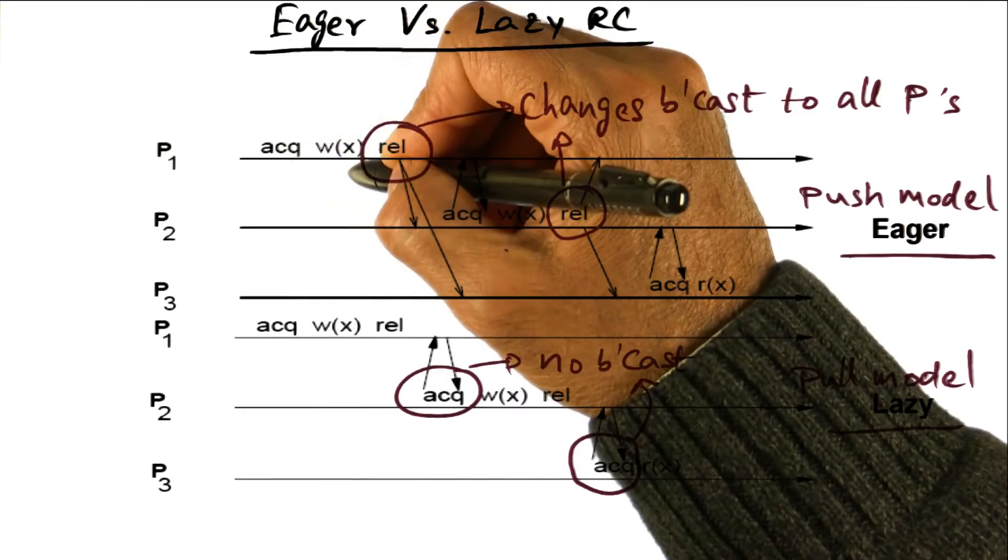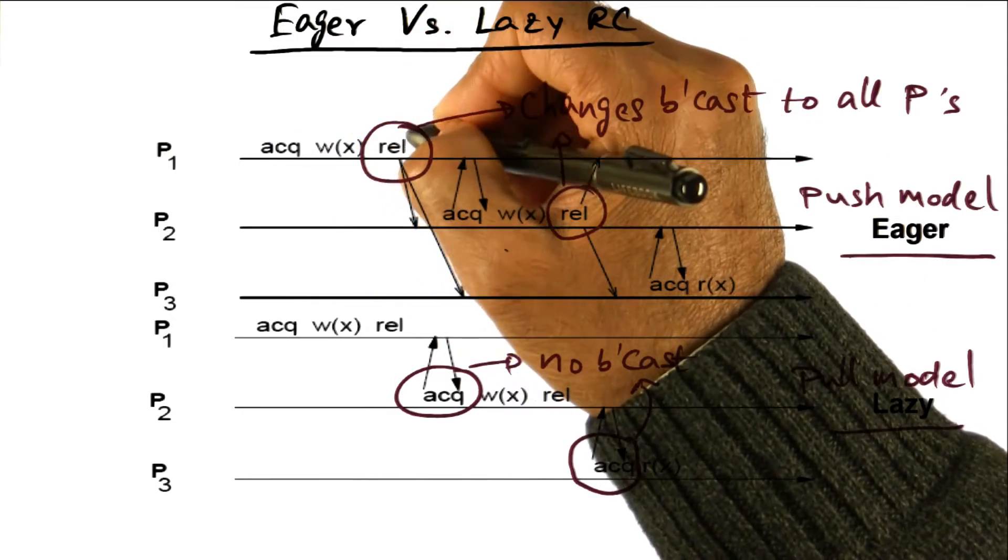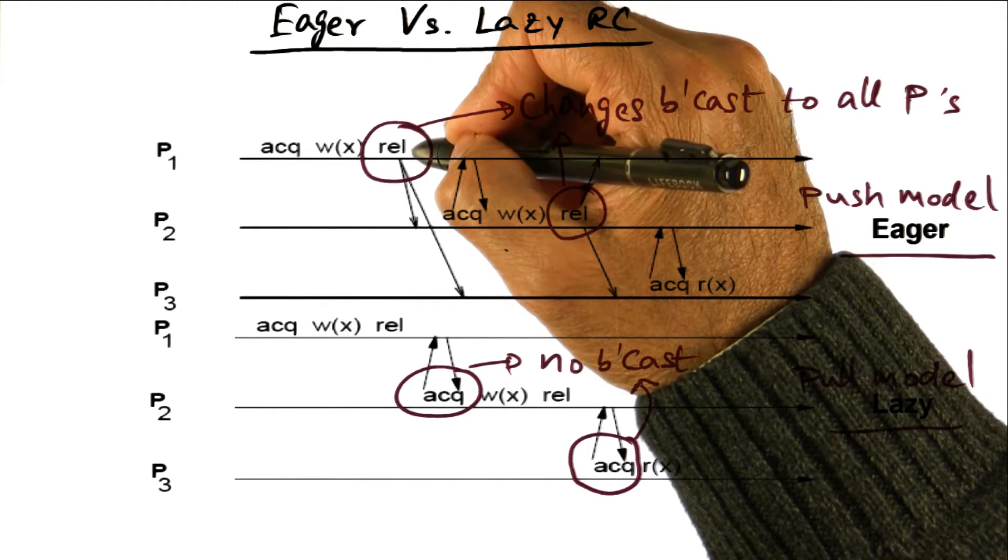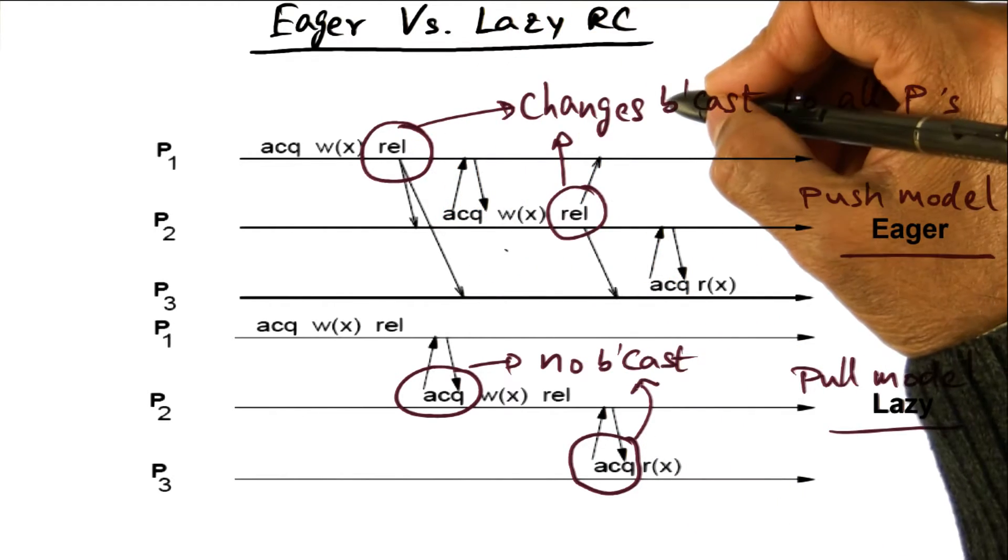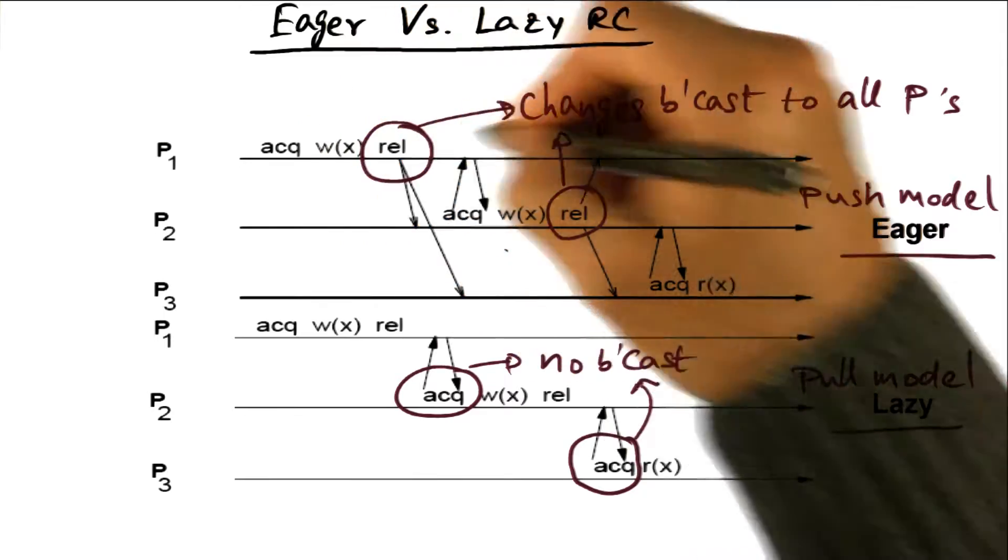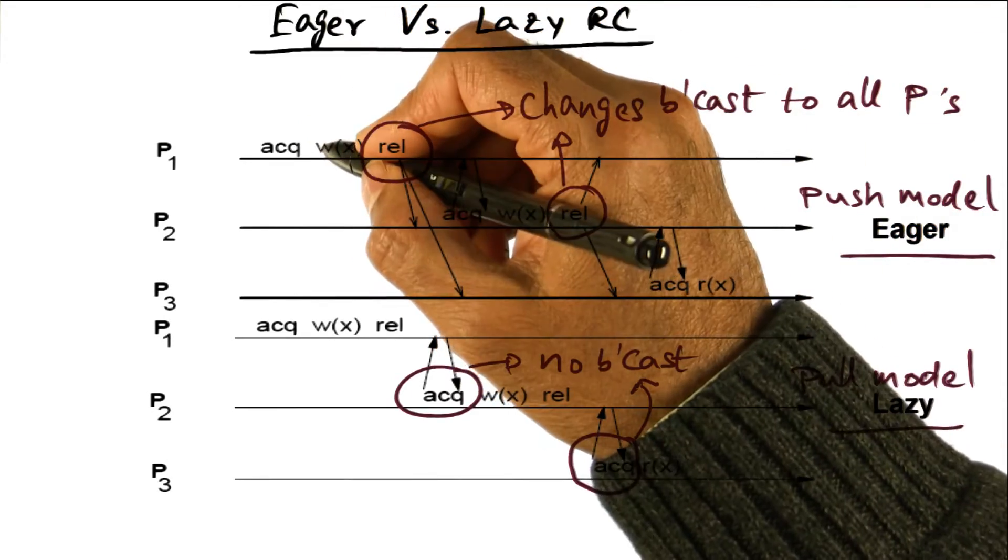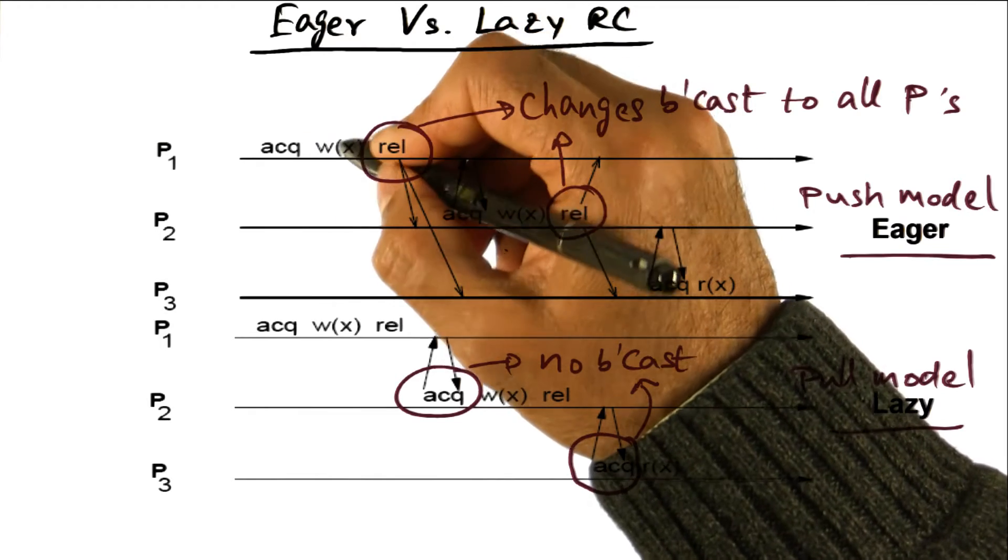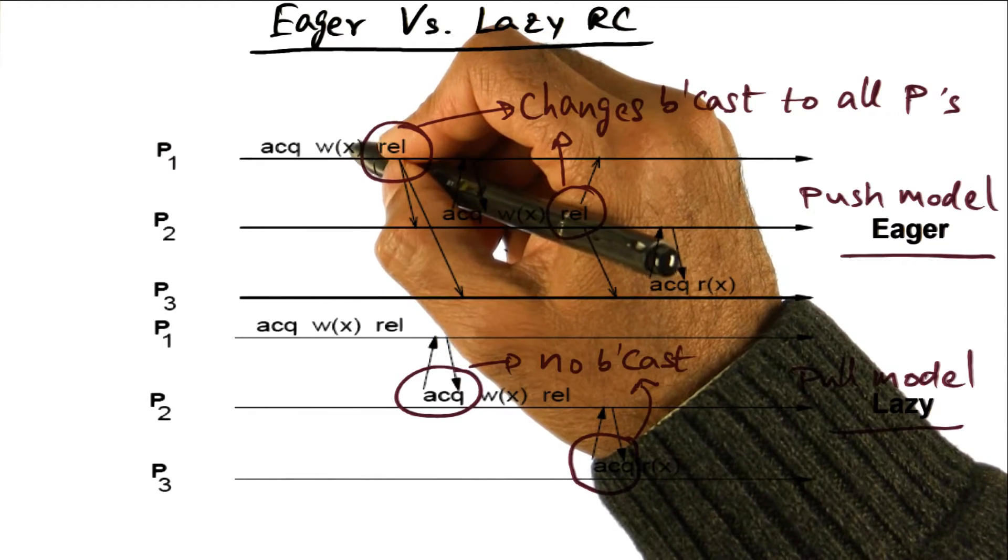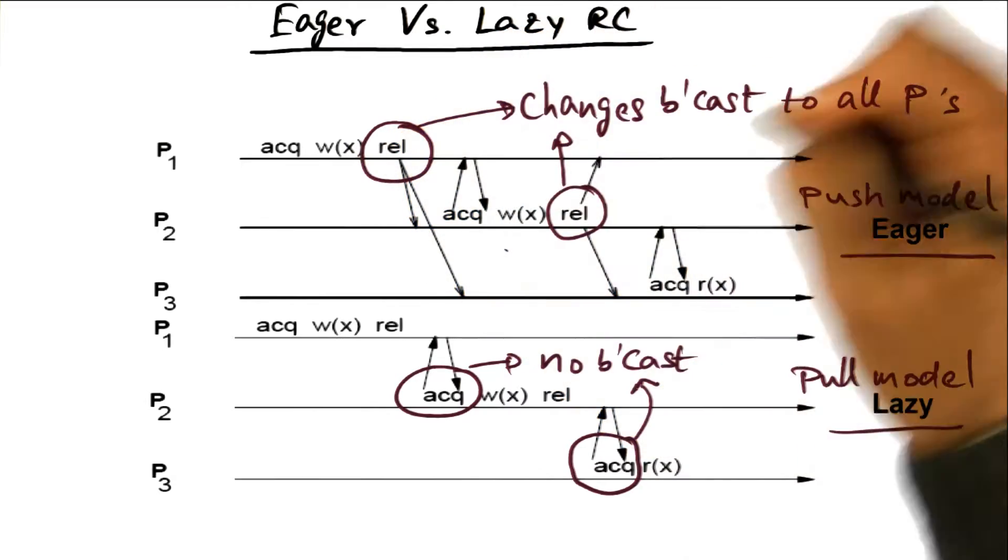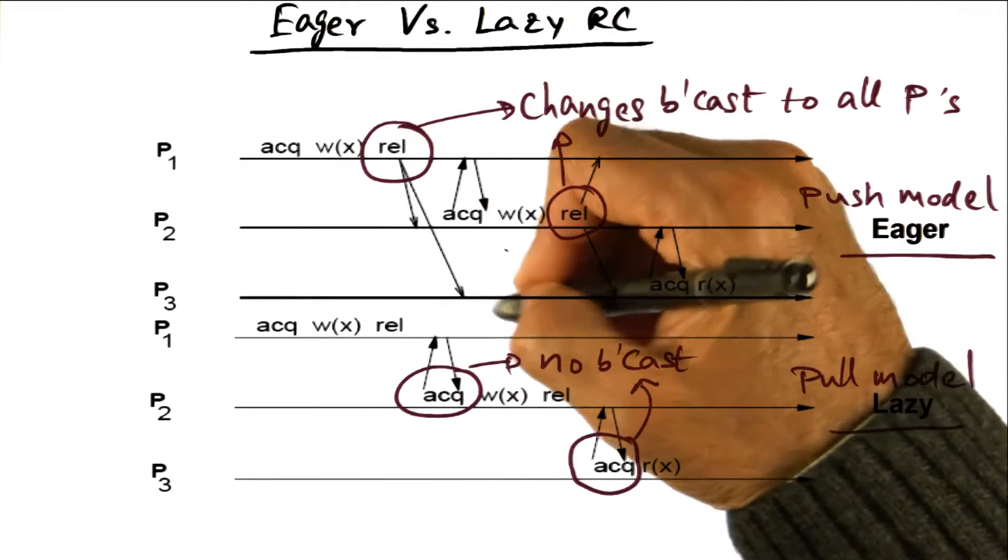So when processor P1 has completed its critical section, does a release operation, at the release point, what we're going to do is all the changes that we made - in this example I'm showing you to make it simple, I'm showing you that in this critical section I wrote to this variable x. So the changes to x is going to be communicated to all the processes, P2 and P3.